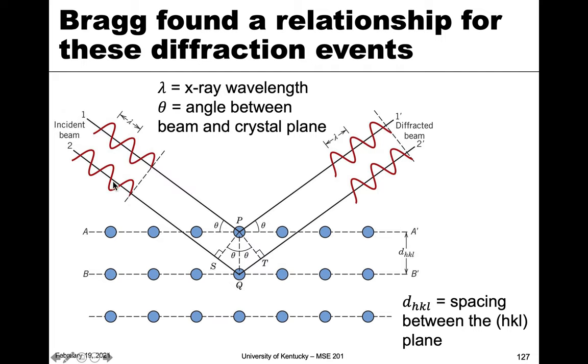The second beam will travel into the sample to a certain extent. The first wave represents those that interact with the first plane, and beam two represents what penetrates the surface and interacts with the second plane. It reaches a point Q and then travels out at the same angle theta. You can imagine this to continue with more x-rays, but we just need these two to develop this relationship.